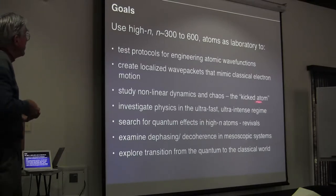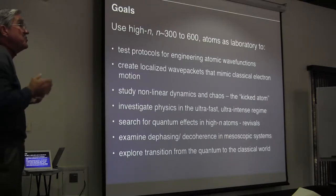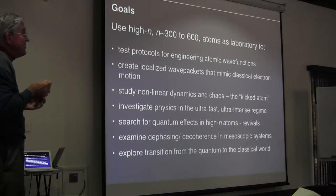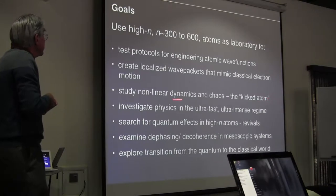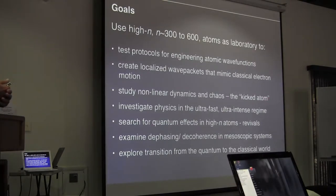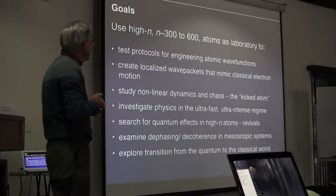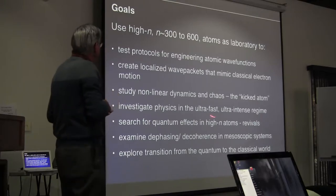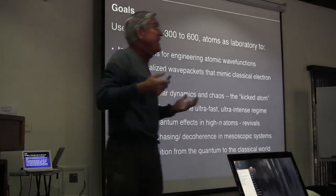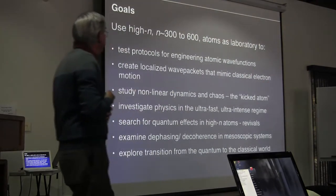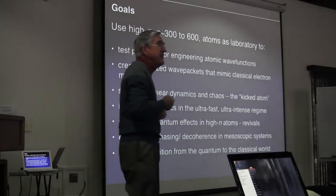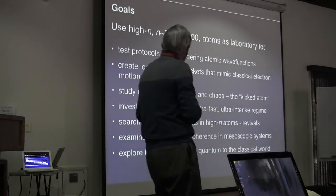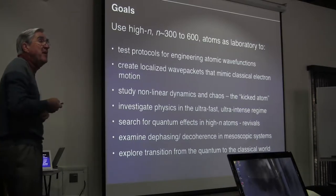One of the things we're trying to do is test protocols for engineering atomic wave functions — sculpting them, molding them into desired shapes. In particular, we often try to create a localized wave packet that mimics the behavior of a classical electron, such as a localized wave packet that moves in a near-circular ball-like orbit around the nucleus. We can apply perturbations in the form of pulsed electric fields whose duration is very much less than the orbital period — the electric field exerts a short force on the electron, giving it an impulsive momentum kick. The kicked atom is a paradigm system for studying non-linear dynamics and chaos. Also, for an atom at n equals 300, a pulsed electric field of one nanosecond duration is ultra-fast, and at one volt per centimeter it's ultra-intense — more than enough to tear the atom apart. So we are doing physics in the ultra-fast, ultra-intense regime using extreme atoms rather than extreme lasers.